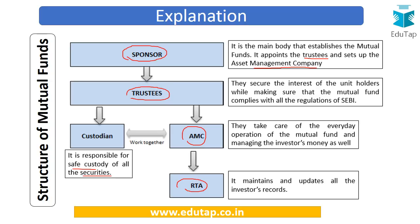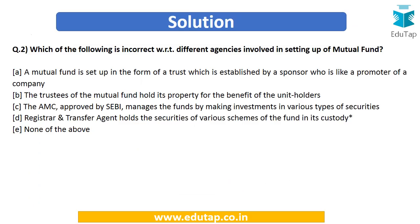There are different sets of investors investing in the mutual fund — some entering for the first time, some leaving — so proper records must be maintained. This is done by the registrar and transfer agents. Therefore, option D is the incorrect statement, because the registrar and transfer agents do not hold securities; rather, they assist in the transfer of securities and maintain proper records of investors.